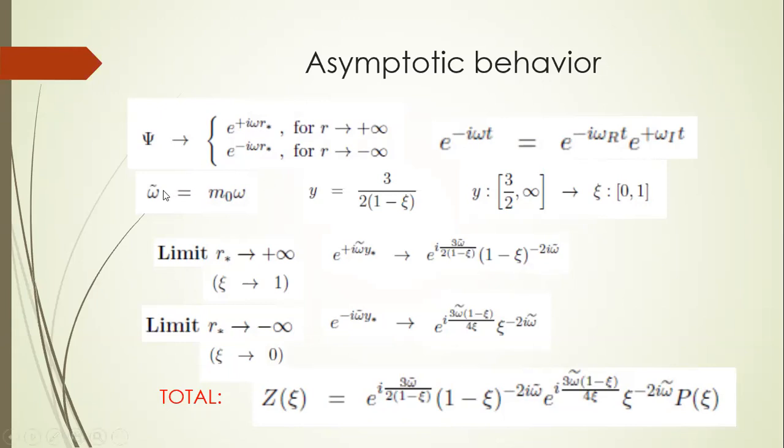We introduce the dimensionless coordinate omega tilde, multiplying it by the mass scale, and we also apply a change of coordinates from y to xi, where xi has a compact support. Why we do this will be clear in a moment when we discuss how to resolve it numerically. In the limit of R star towards infinity, xi towards 1, we get this asymptotic behavior, and for R star towards minus infinity, xi towards 0, we get this asymptotic behavior. We multiply them and extract the asymptotic behavior from the function, and define a new function, p of xi. This is the usual way to solve the differential equation.